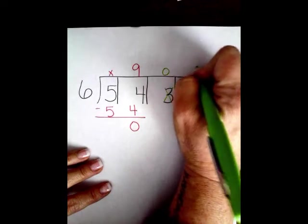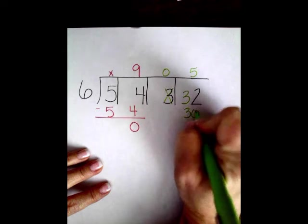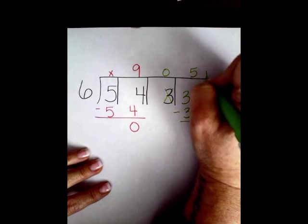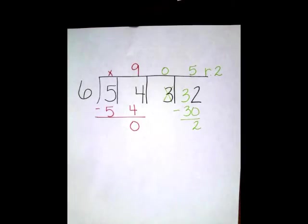Now, 6 goes into 32, 5 times. 5 times 6 is 30. Subtract. Get 2. Remainder 2. I really hope that was helpful, guys. Enjoy.